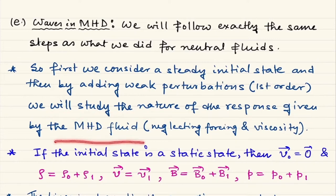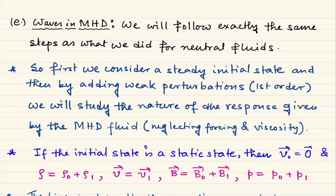We study the nature of the response given by the MHD fluid. After expressing every quantity as its initial value plus the first-order perturbation, we replace all values in the original equations, drop the zeroth-order terms (which cancel due to zeroth-order equations), and neglect second-order terms. This leaves a set of linear equations. We then assume plane-wave-type solutions and derive a relation between the frequency ω and the wave vector k — the dispersion relation.